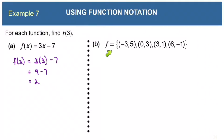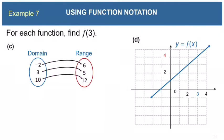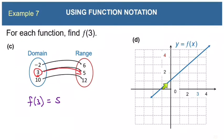In part B, f is not an equation but a list of ordered pairs. So f of 3 means we look at the ordered pair where x is 3, and we can see that if x is 3, y is 1. So f of 3 is 1. Here is a mapping function: when x is 3, y is 5. So f of 3 is 5.